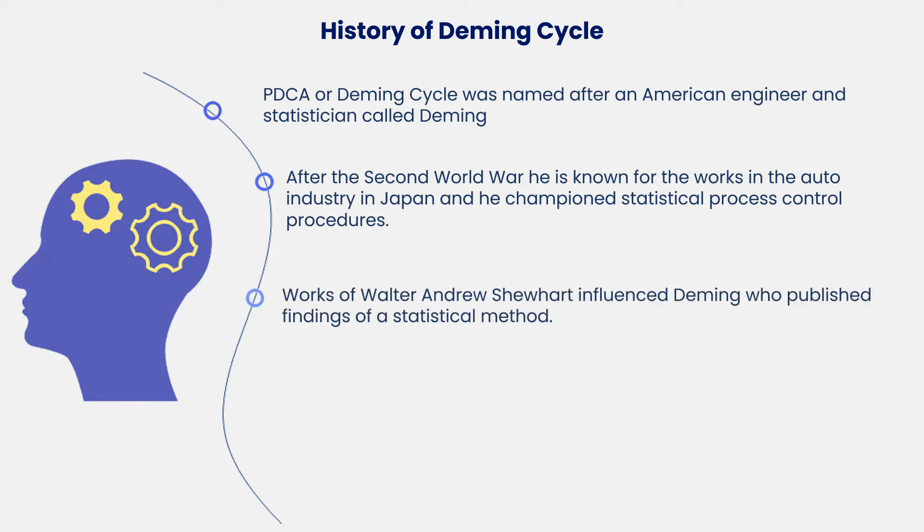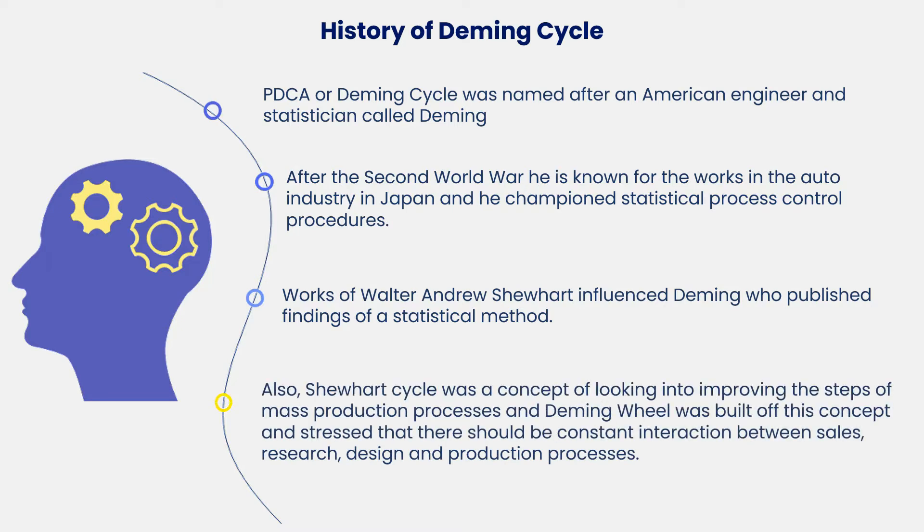The works of Dr. Walter Andrew Shuhart, who published findings of a statistical method, influenced Deming. The Shuhart Cycle was the concept of looking into improving the steps of mass production processes, and the Deming Wheel was built off this concept, and stressed that there should be constant interaction between sales, research, design, and production processes.